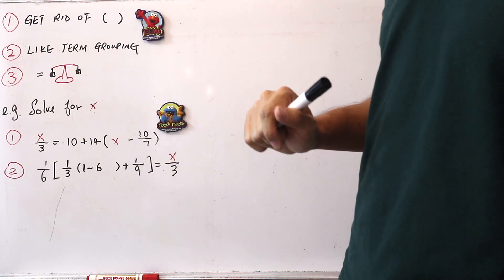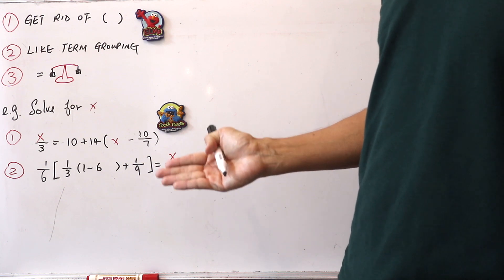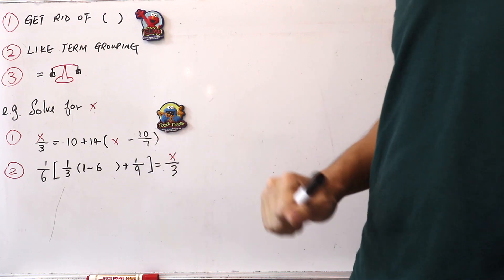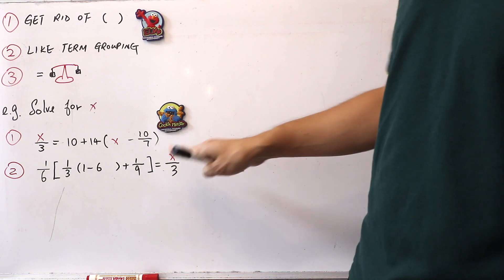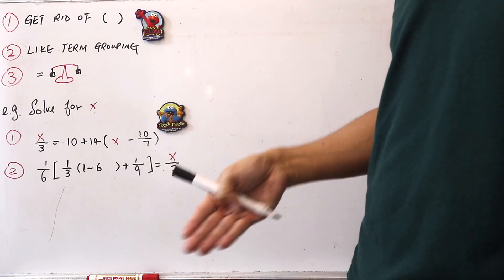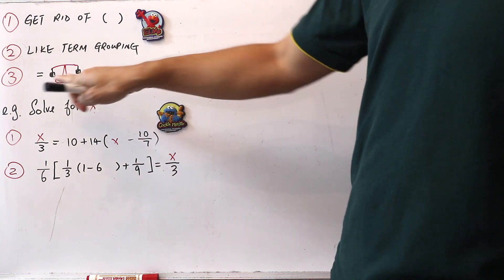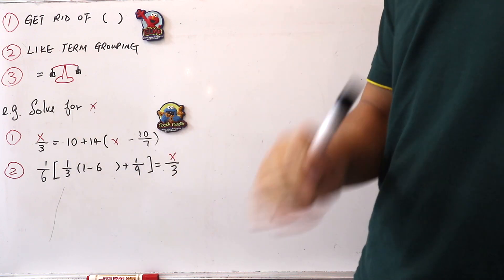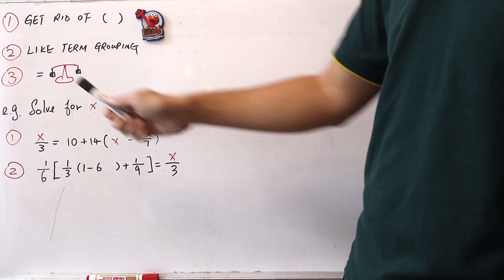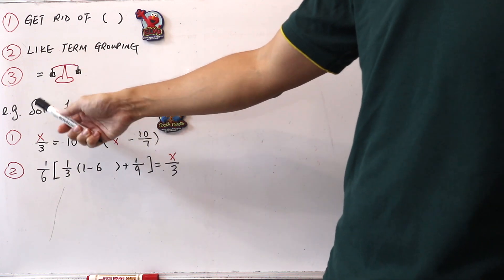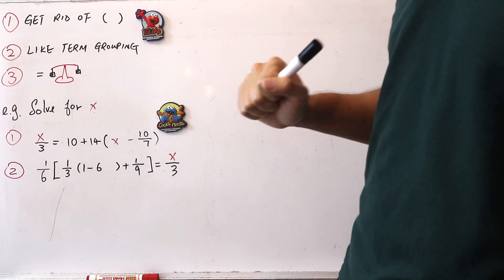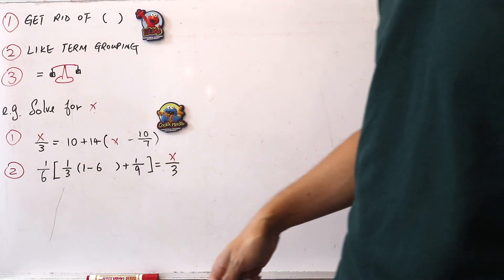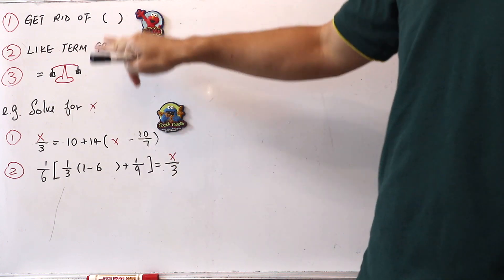The second highlight is like term grouping. Since this chapter involves only one unknown, as in these two examples, we only have x. Like term grouping means grouping the unknown terms together and grouping the constants together. The third highlight involves the equal sign — you have to treat it like a weighing scale. Whatever you do on the left-hand side of the equal sign, you have to do the same thing on the right-hand side. These three highlights are very important.